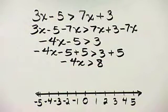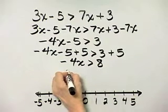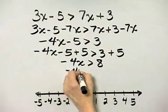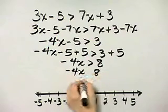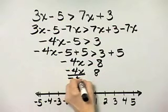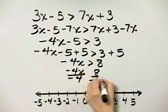We finish solving by dividing both sides by the coefficient of x. Now, be very careful because we have an inequality. I'll divide the left side by negative 4, the right side by negative 4.